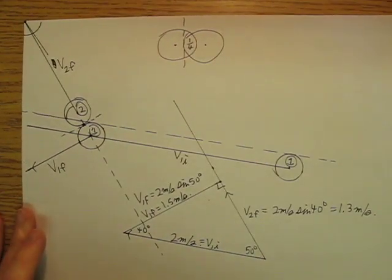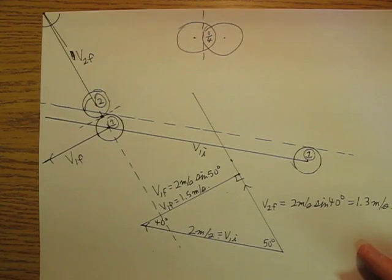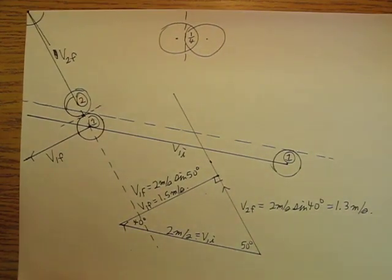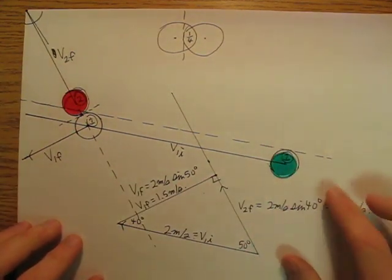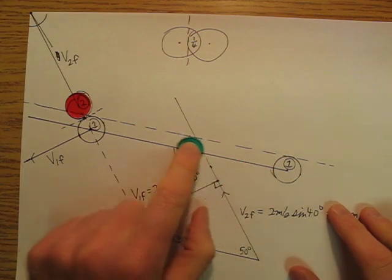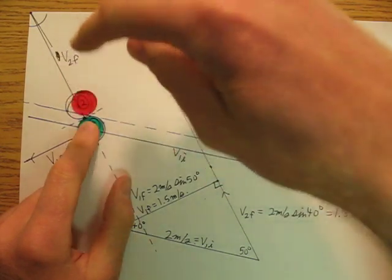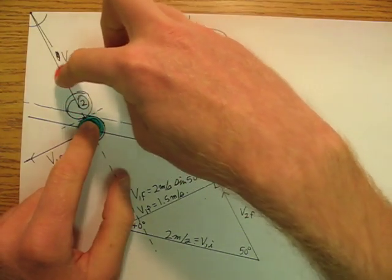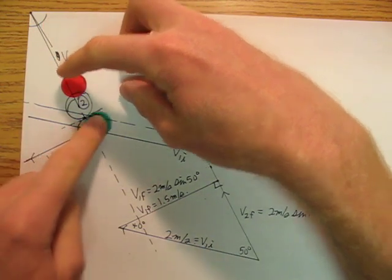Okay, so we made a bunch of simplifications, but the end product of what we figured out from our basic pool shot without any spin, and assuming that kinetic energy is conserved, is red ball is sitting stationary, green ball is coming in at 2 meters per second. When it hits, the red ball goes this way at 1.3 meters per second, and the green ball goes this way at 1.5 meters per second.